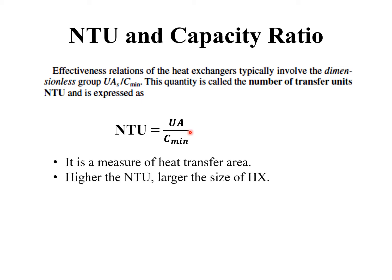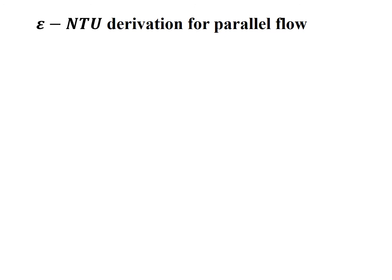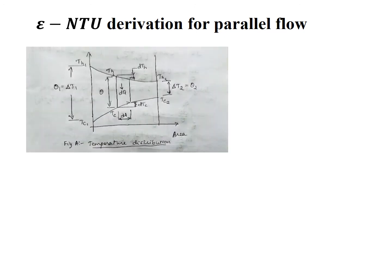The significance of NTU is that it is a measure of the heat transfer area — higher NTU means a larger heat exchanger. The capacity ratio C = C_min / C_max is generally less than one; when both capacities are equal it equals one. For a condenser or boiler, the capacity ratio is zero.